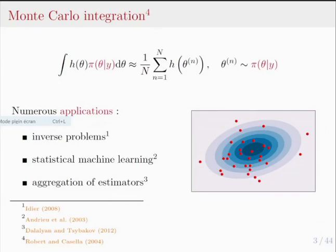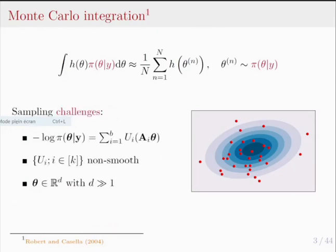You now have to sample N samples from the target posterior distribution. This type of Monte Carlo integration problem has numerous applications, such as in inverse problems, statistical machine learning, or in order to aggregate estimators.